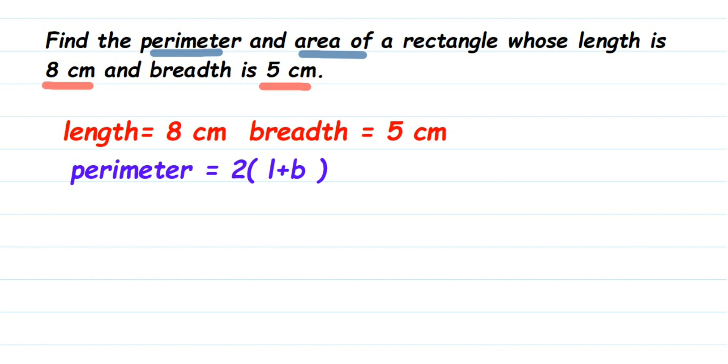Now substitute the values. 2 will remain the same. Length is 8 and breadth is 5, so 8 + 5 = 13. Then 2 × 13 = 26, so 26 cm will be the perimeter.